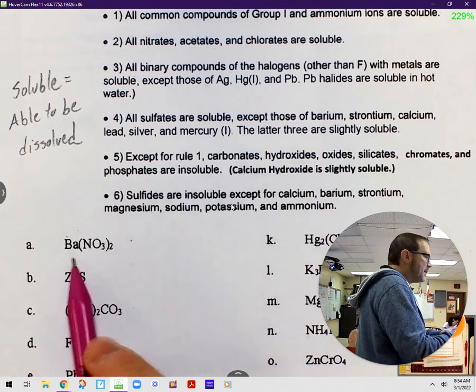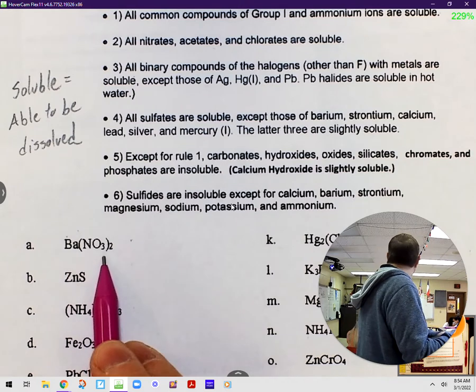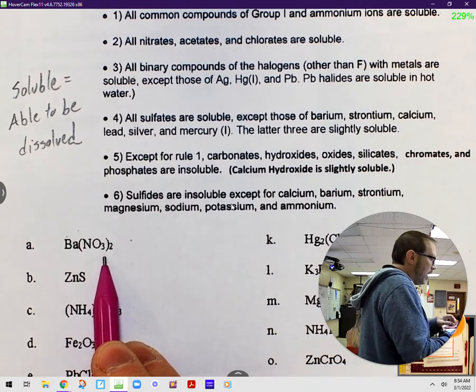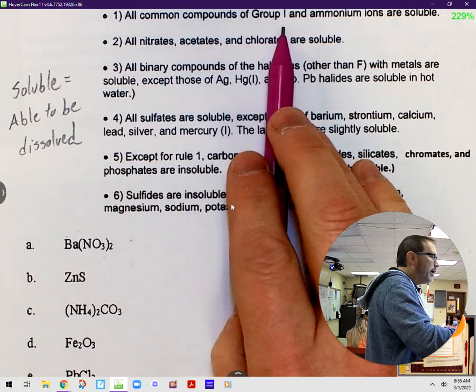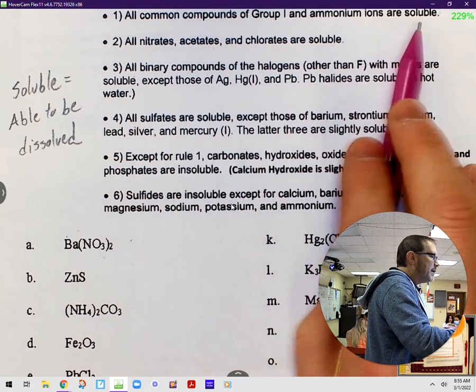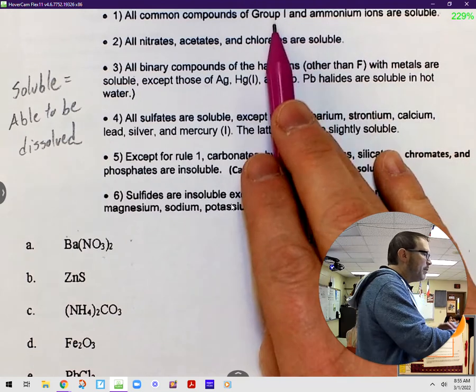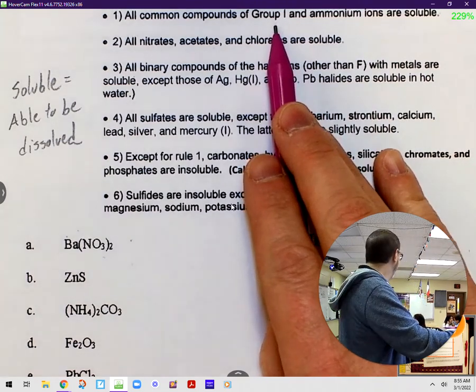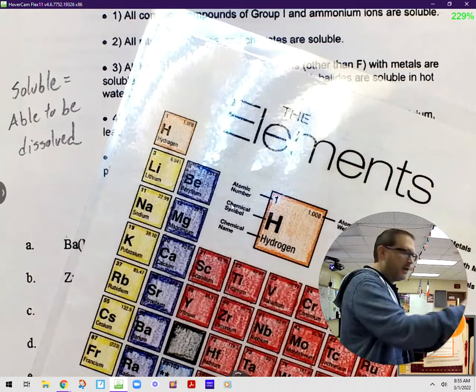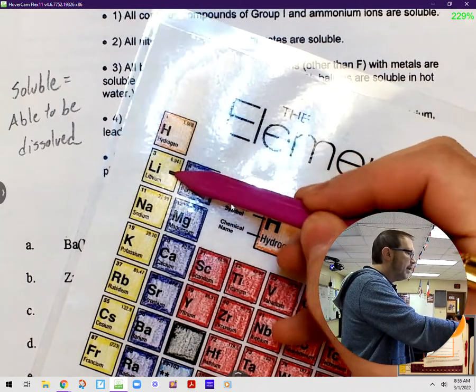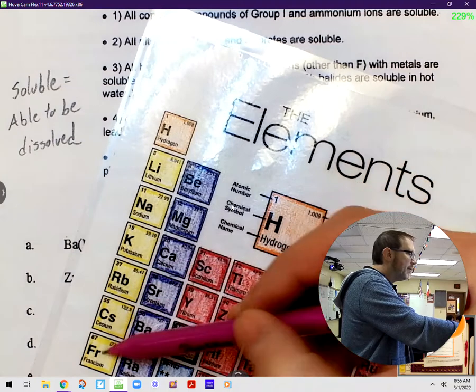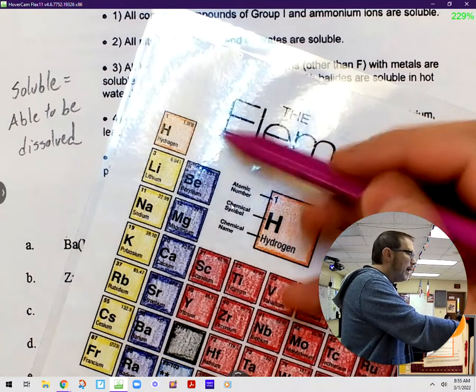Let's take a look at our first substance right here, this Ba(NO3)2. We're going to start with rule number one. Rule number one says that all common compounds of group one and ammonium ions are soluble. What does it mean by group one? So on your periodic table, this group right here, this first column, that's group one. So we're looking to see if we've got lithium, sodium, potassium, rubidium, cesium, francium. Why am I not mentioning hydrogen?